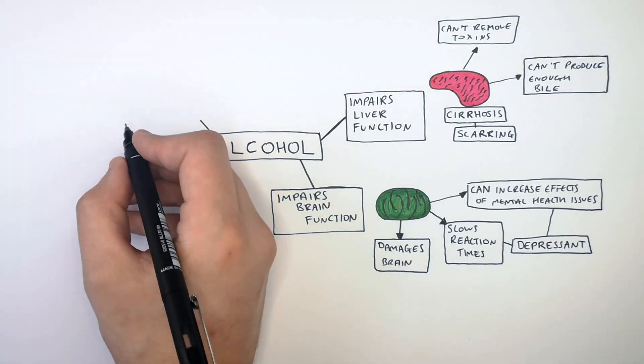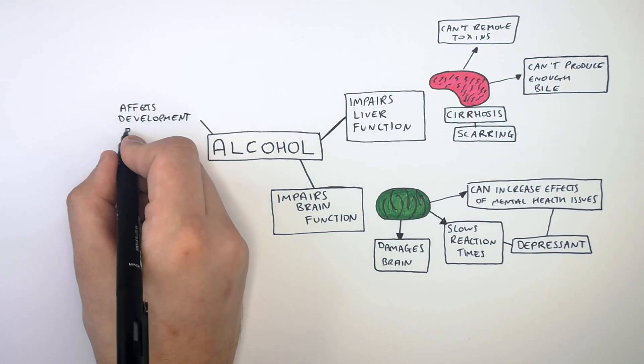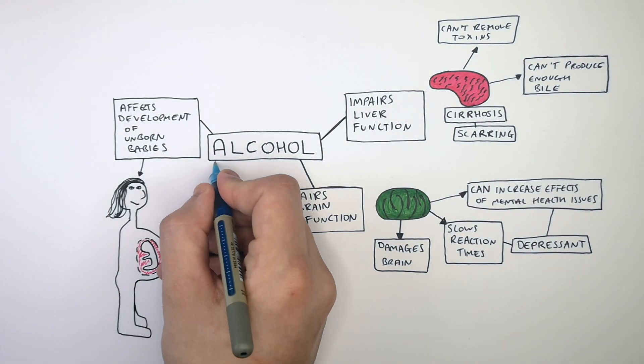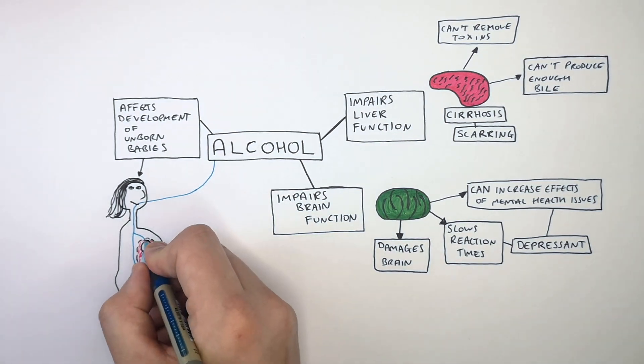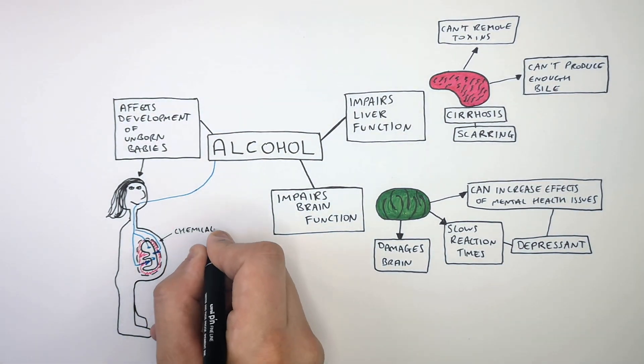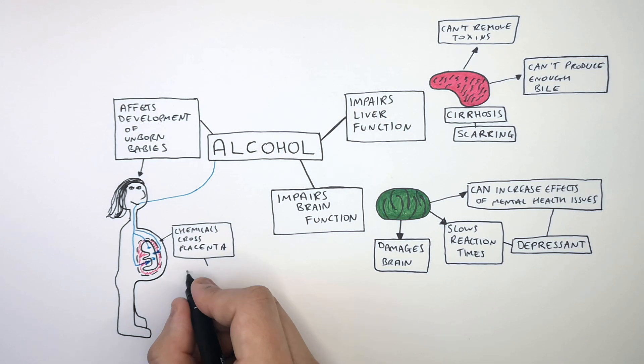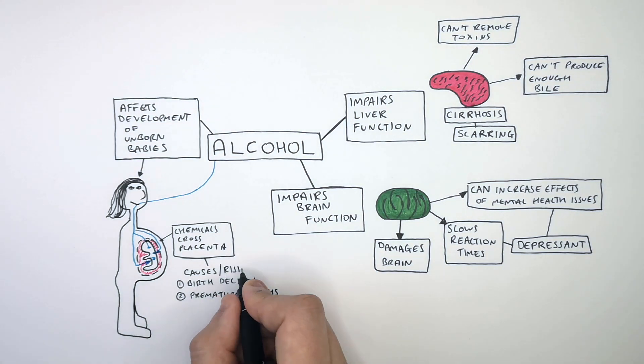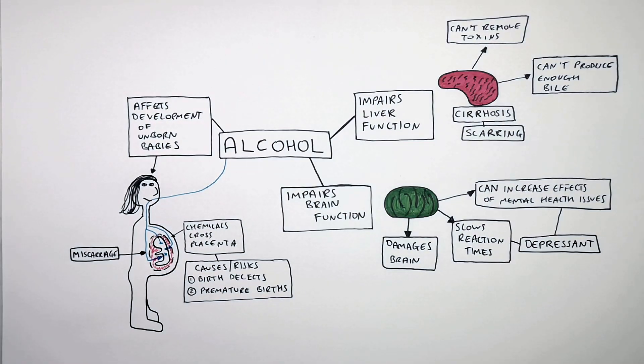Just like cigarette smoke, alcohol will also affect the development of an unborn baby. This can lead to birth defects, premature births, as well as miscarriage in the most serious alcohol abuse.